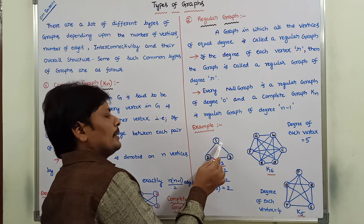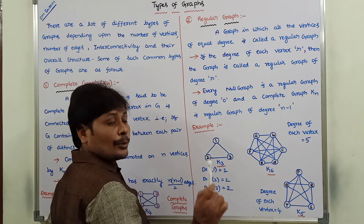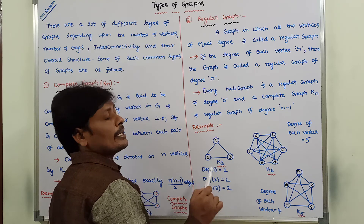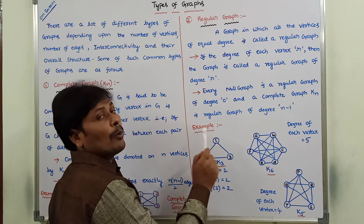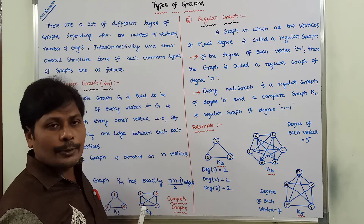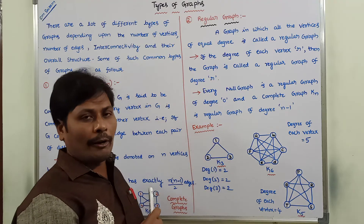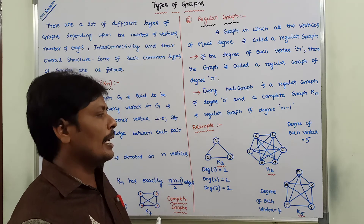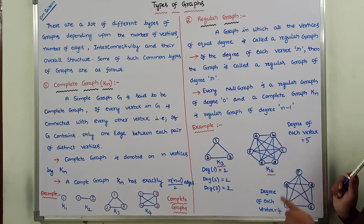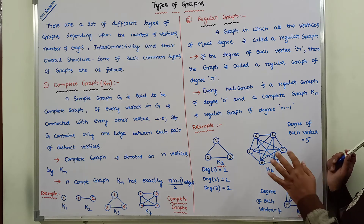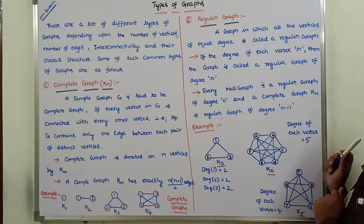Degree of vertex 1 is 2, degree of vertex 2 is 2, degree of vertex 3 is 2. All the vertices have equal degree, so that type of graph is called a regular graph. Now consider this K6 — it contains 6 vertices A, B, C, D, E, F.